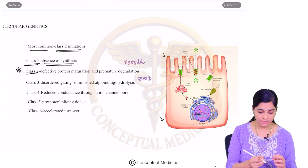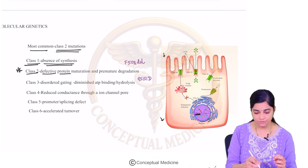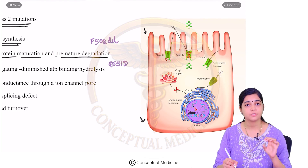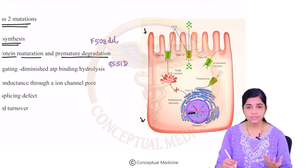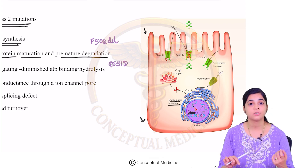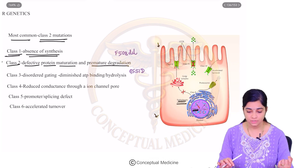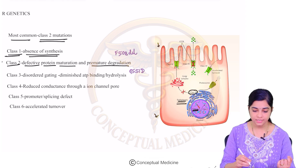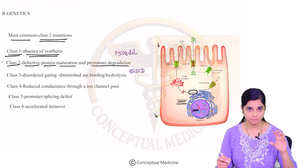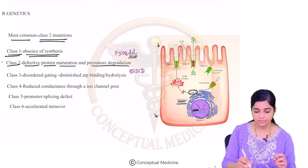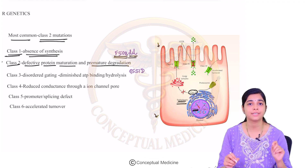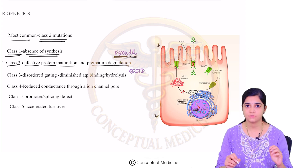Class 2 is the most common type of mutation: there is defective protein maturation and premature degradation. The CFTR produced in its nascent stage has to undergo processing via the endoplasmic reticulum and then the Golgi apparatus. In class 2, this maturation is defective and the protein is prematurely degraded. The specific genetic defect is a deletion at F508 — the F508 deletion is the most common CFTR mutation.